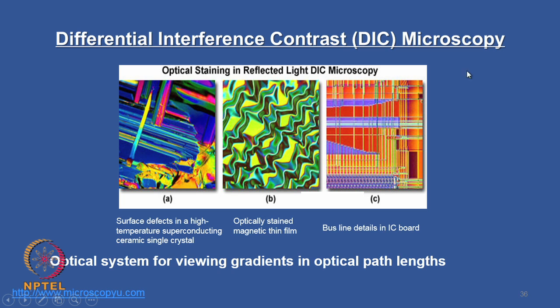We will see what is the principle of this technique. It is an optical system for viewing gradients in the optical path lengths. In a previous class, we saw phase contrast microscopy, which is an optical system that converts the optical path difference in the image. Here, DIC is an optical system used to view the gradient in the optical path length, or optical path difference.